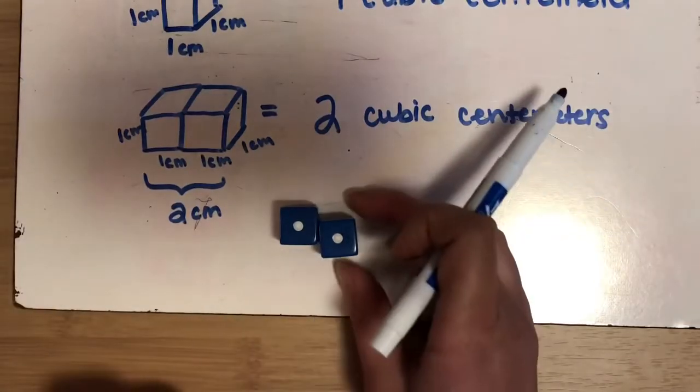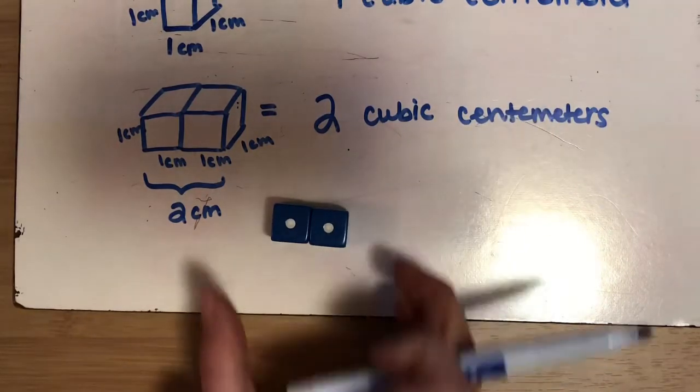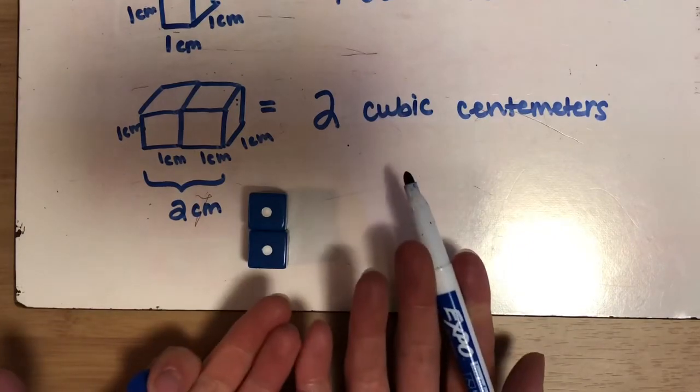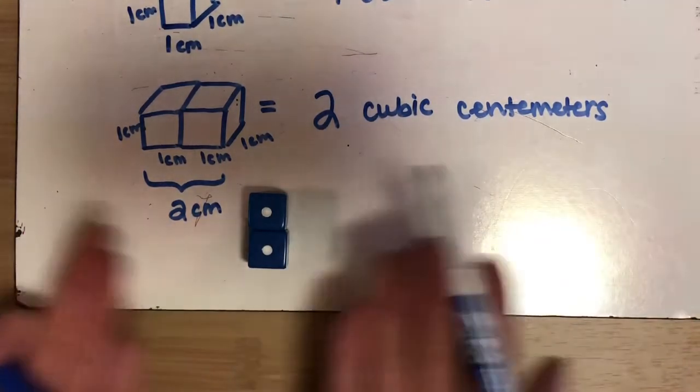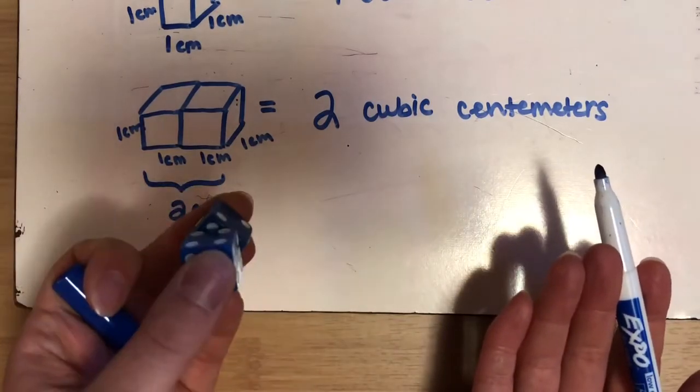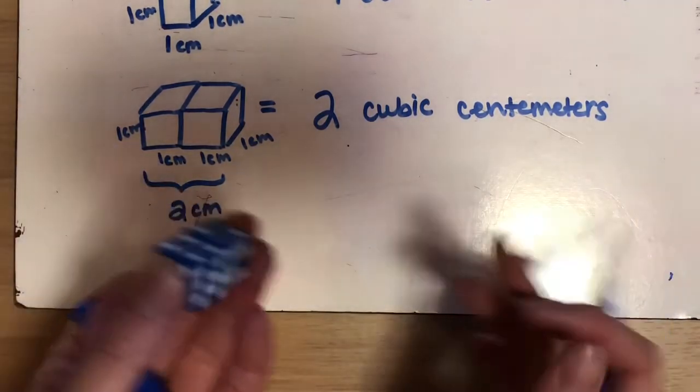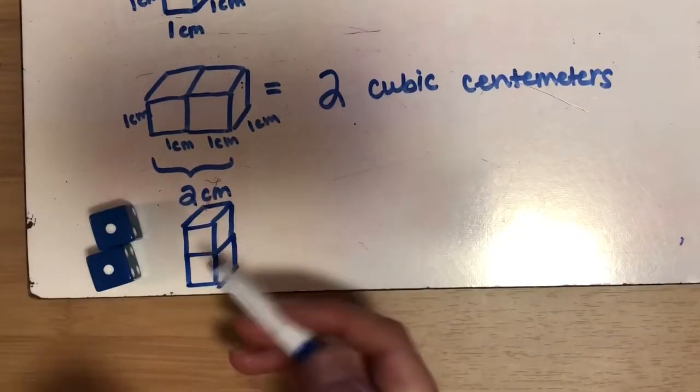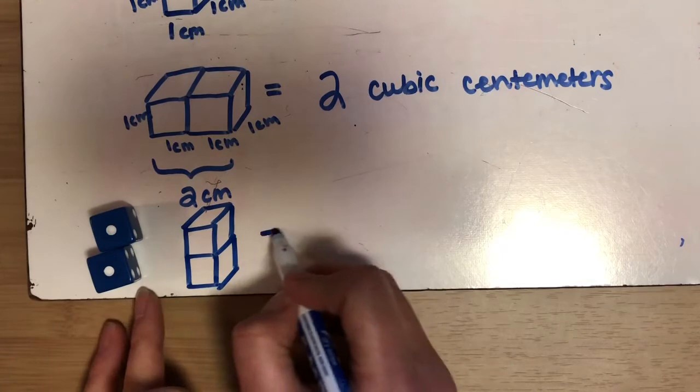This one I showed the dice sitting this way, but what if I turn the dice? Does that change the amount of volume? No, it doesn't change at all. I still have two, right? It doesn't matter which direction they're in. I can move them any which way. Doesn't matter, I still have two dice here, so they're still worth two cubic centimeters. So even if I have my dice up and down, this is still worth two cubic centimeters.